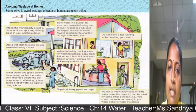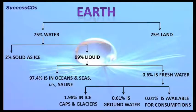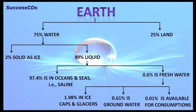Try not to throw away used or extra water down the drain if it can be used for other purposes — for example, use water remaining in your bottle to water the plants. Out of all the water on earth, 97.4 percent is present in oceans and seas and is saline. Only 0.6 percent is freshwater, of which 1.98 percent is in ice caps and glaciers, 0.61 percent is groundwater, and only 0.01 percent is available for consumption. Hence there is a great need to conserve water.